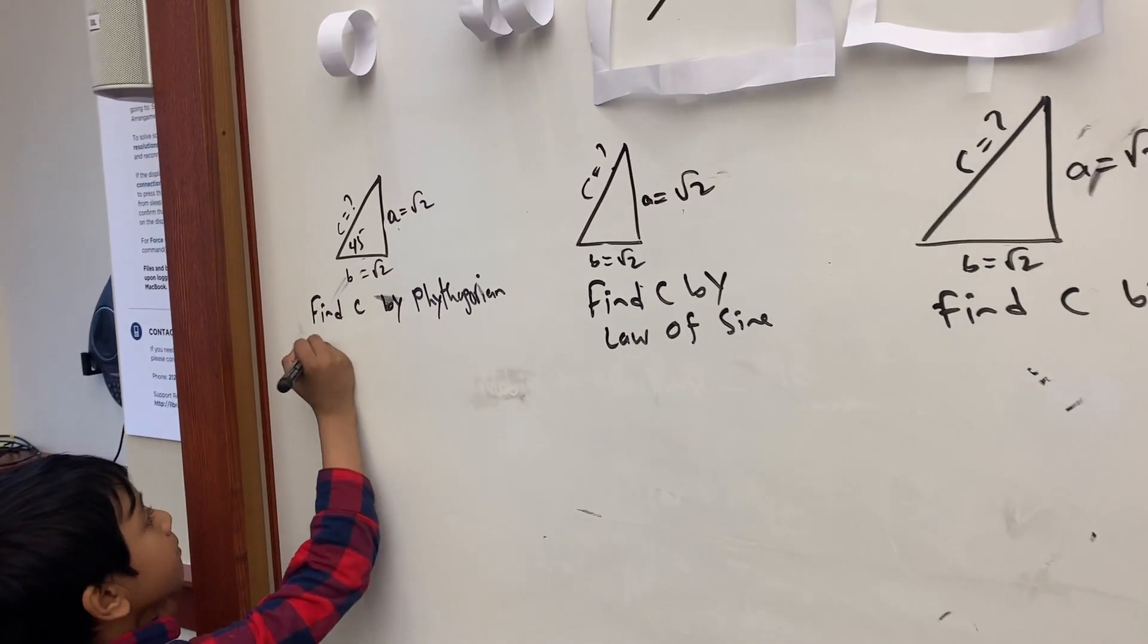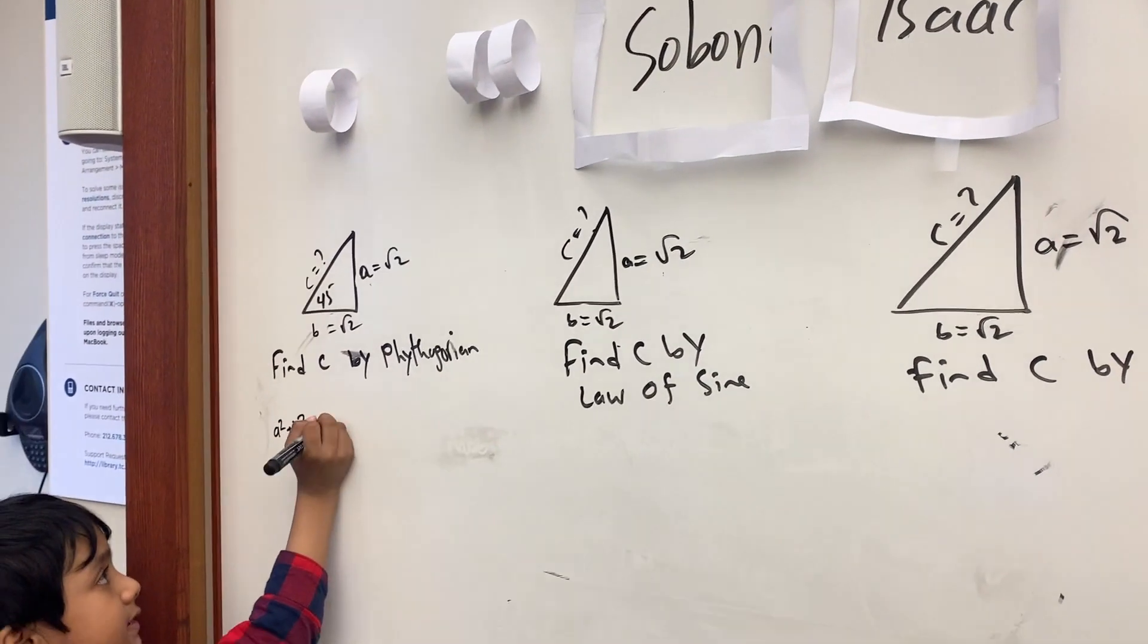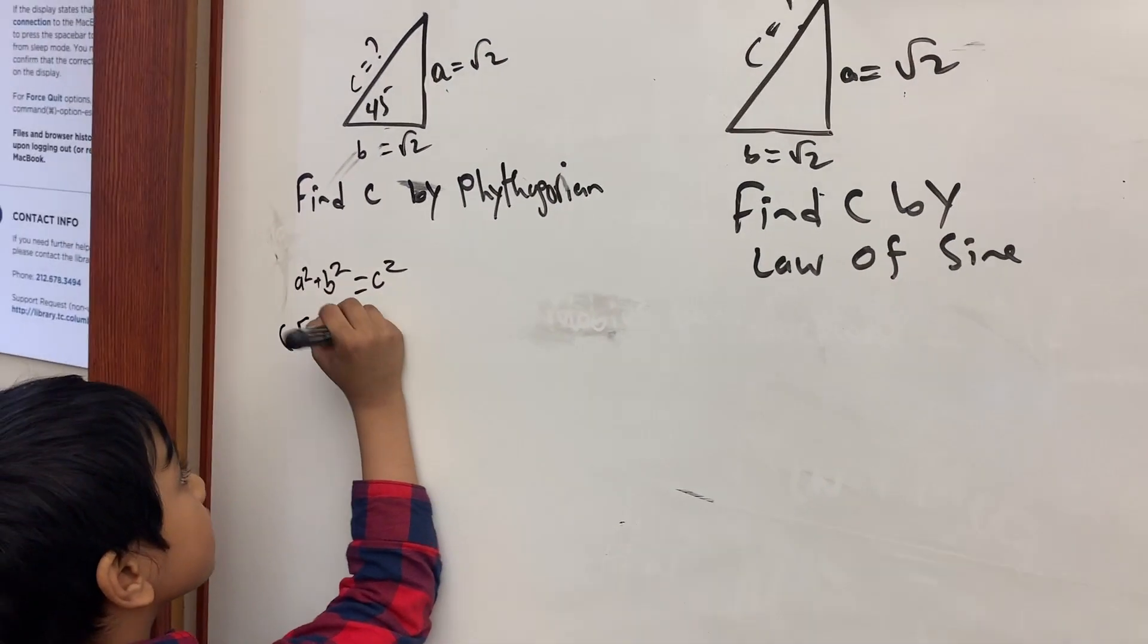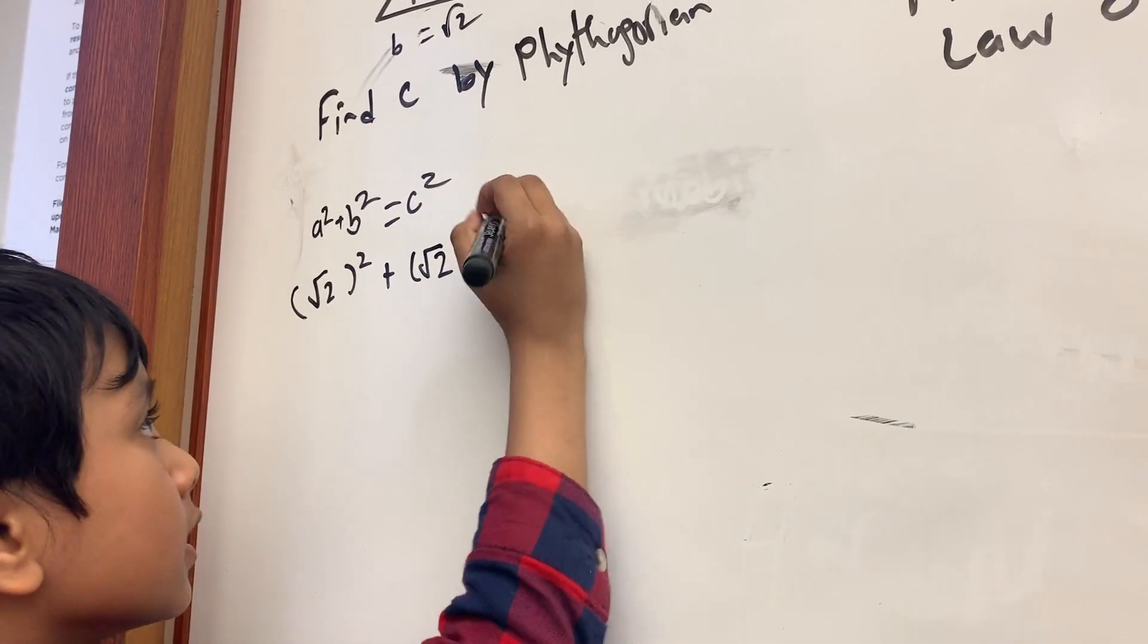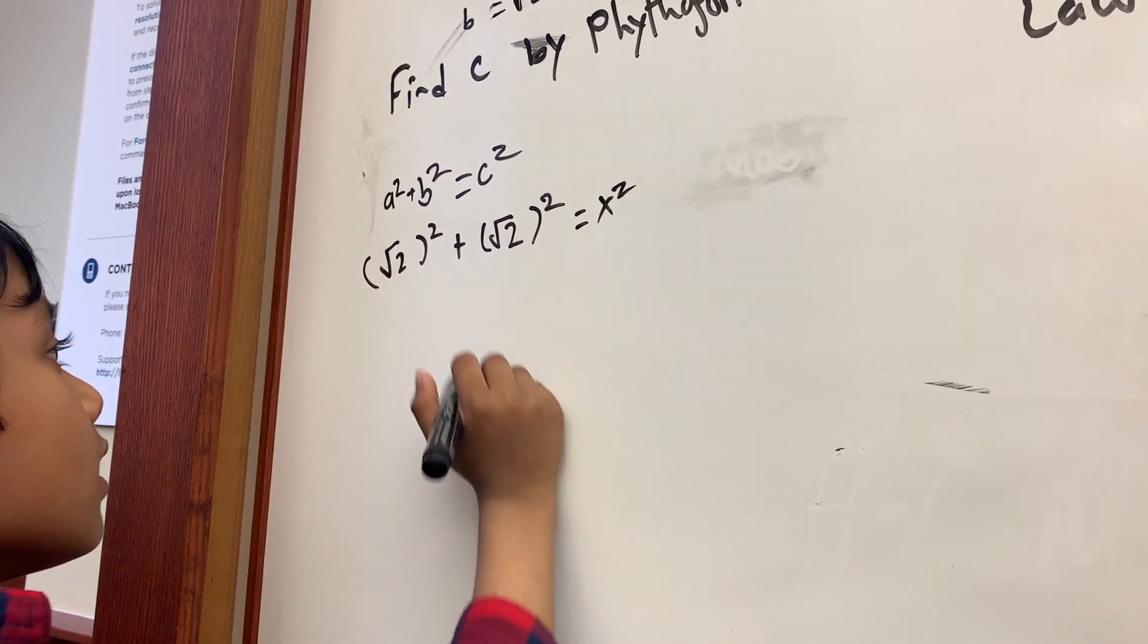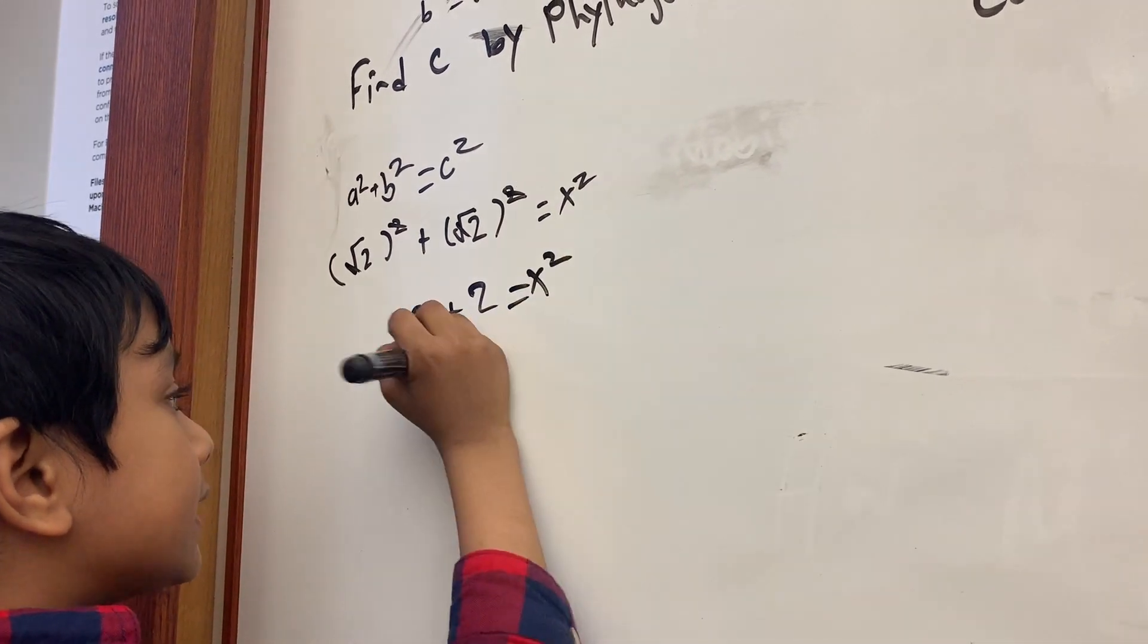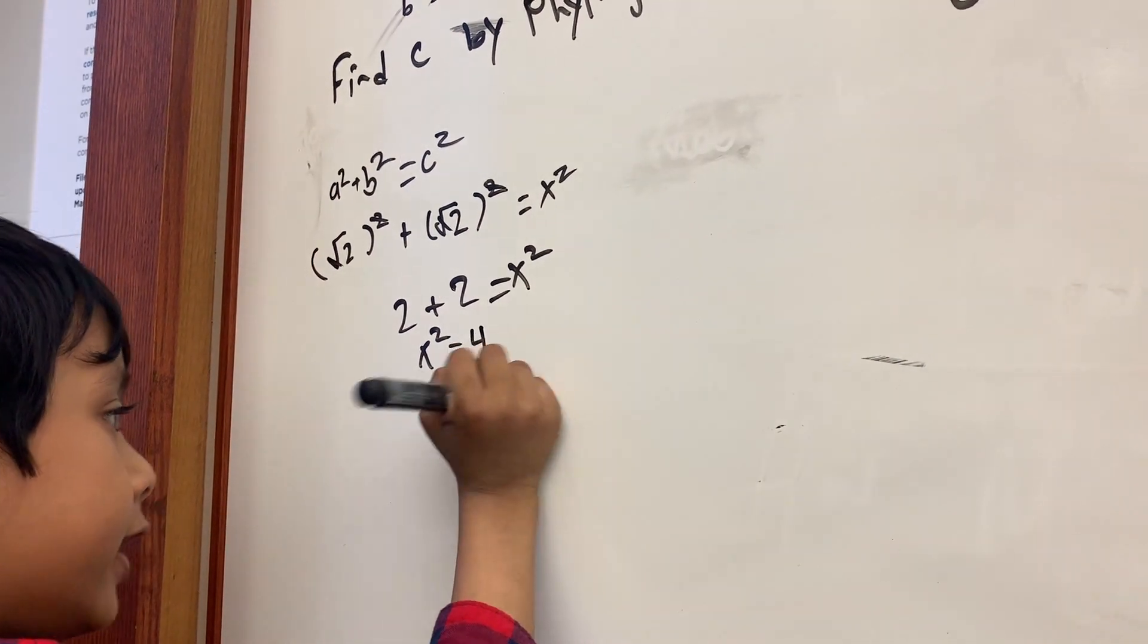The Pythagorean theorem is A squared plus B squared equals C squared. A is root 2 squared and B is also root 2 squared, so that equals C squared. Root 2 squared is 2, and root 2 squared is also 2. So 2 plus 2 equals x squared. That means x squared is 4, and now we know that C is actually 2.